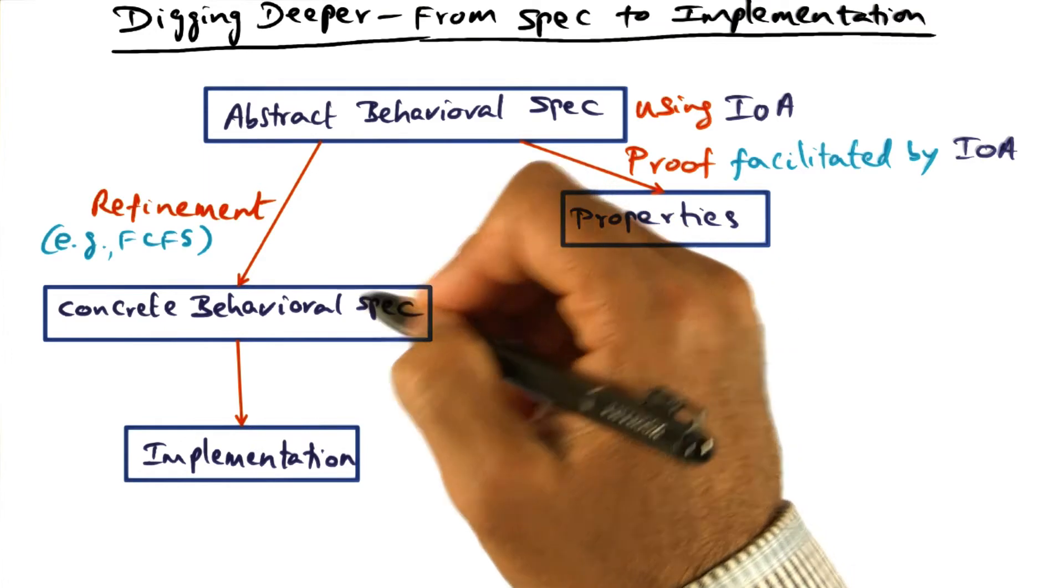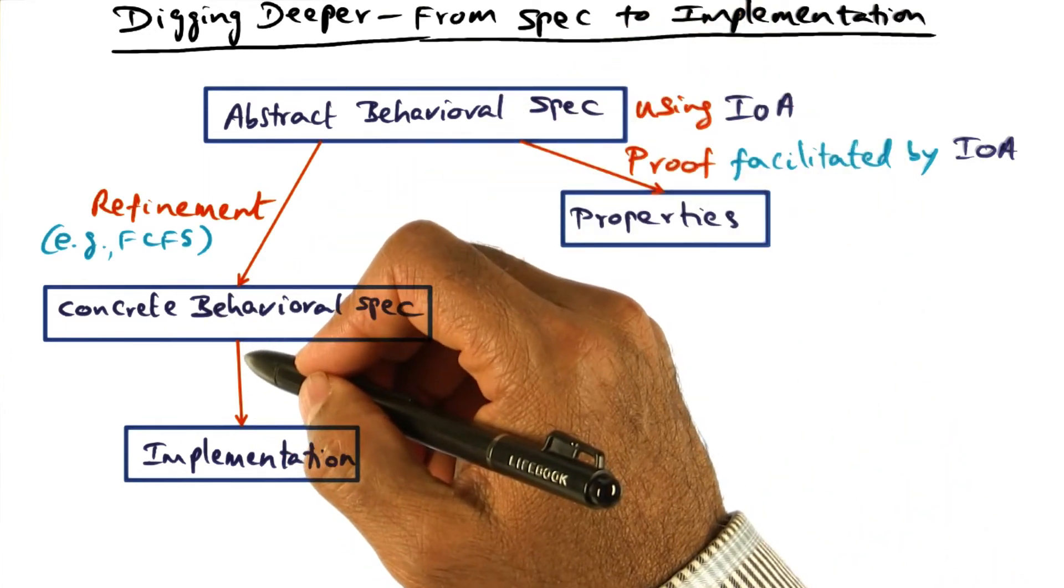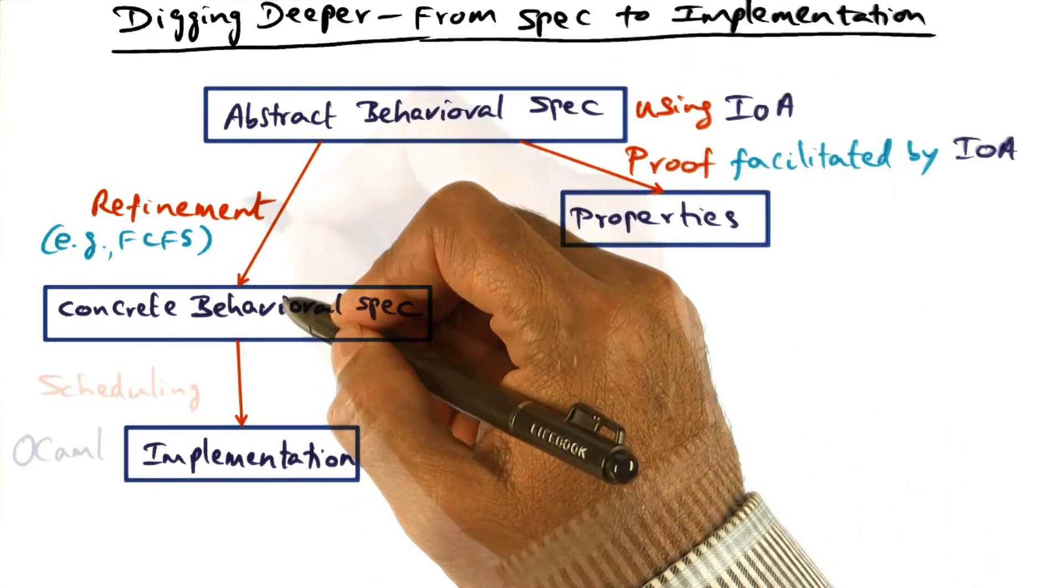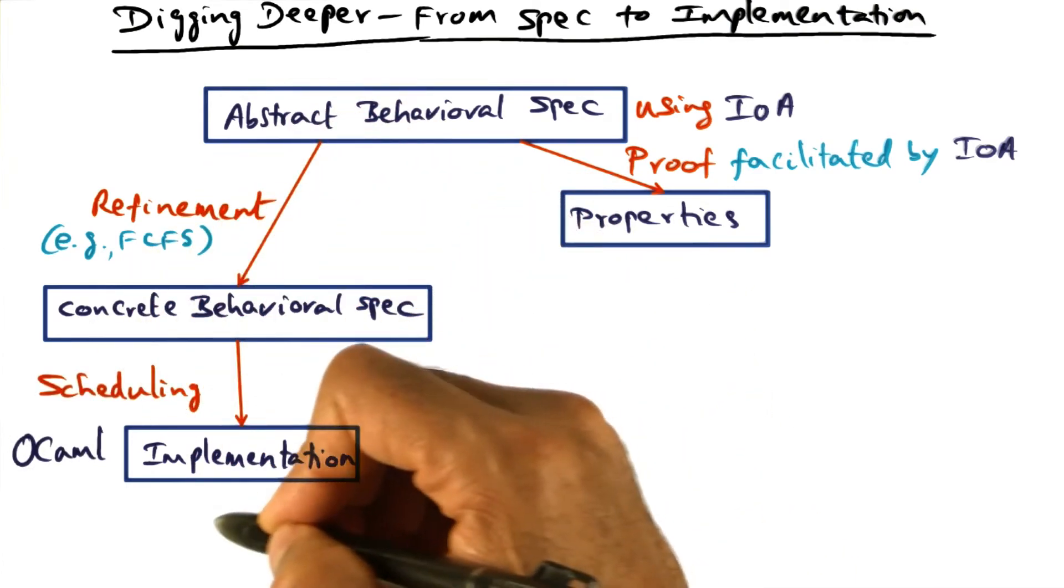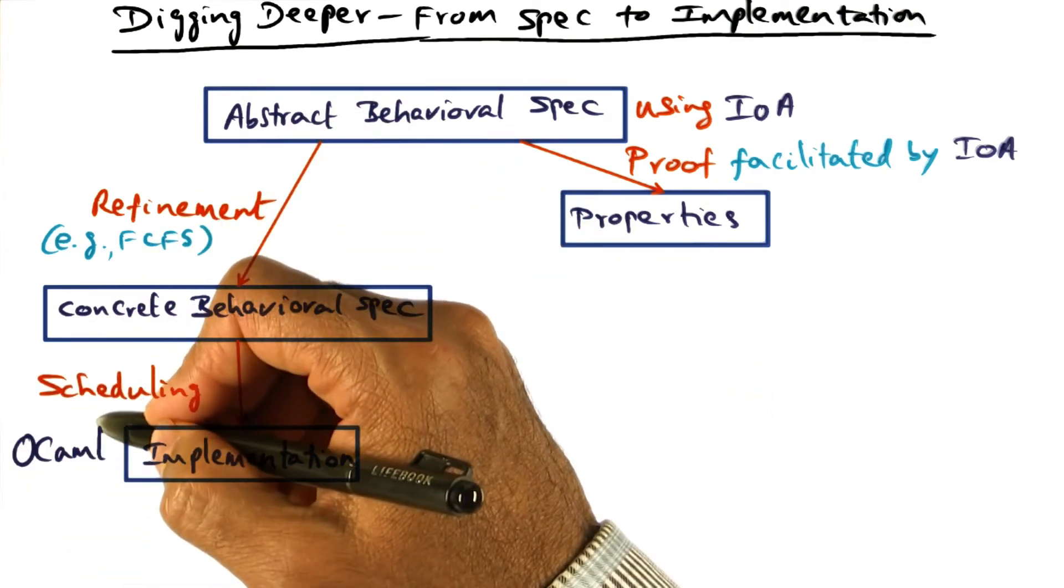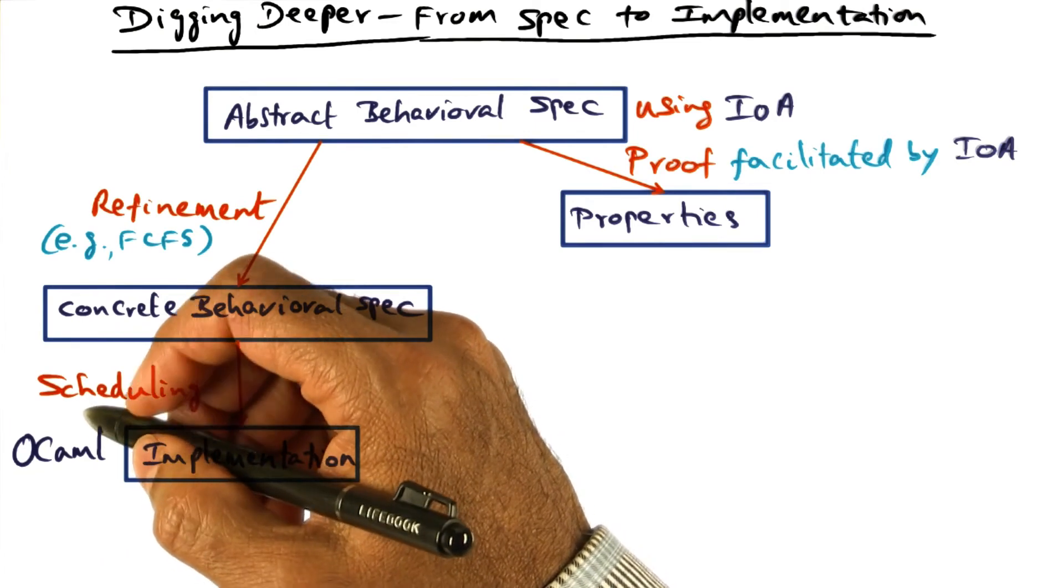This is still not code, but it is closer to code than abstract behavioral spec. It's closer to implementation. And from the concrete behavioral spec, we get to the actual implementation using OCaml as the programming language.